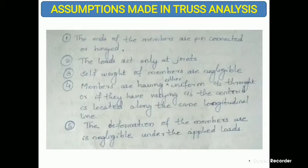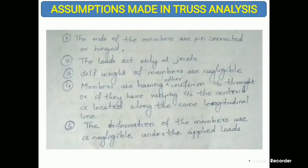In all engineering analysis, before solving any problem, certain assumptions are made. In the analysis of a truss, the assumptions are: first, the ends of members are pin-connected or hinged; second, loads act only at joints — this is very important and may appear as an MCQ question; third, the self-weight of members is negligible.